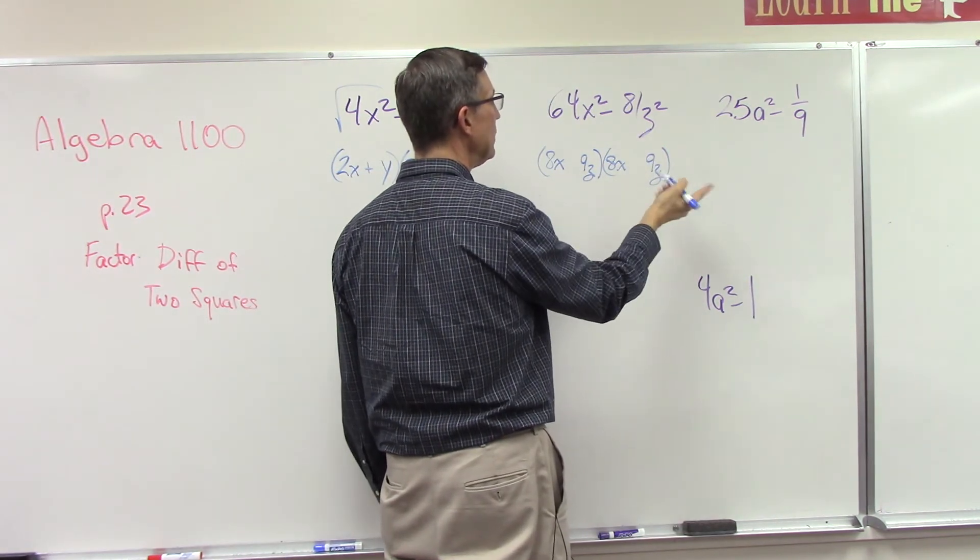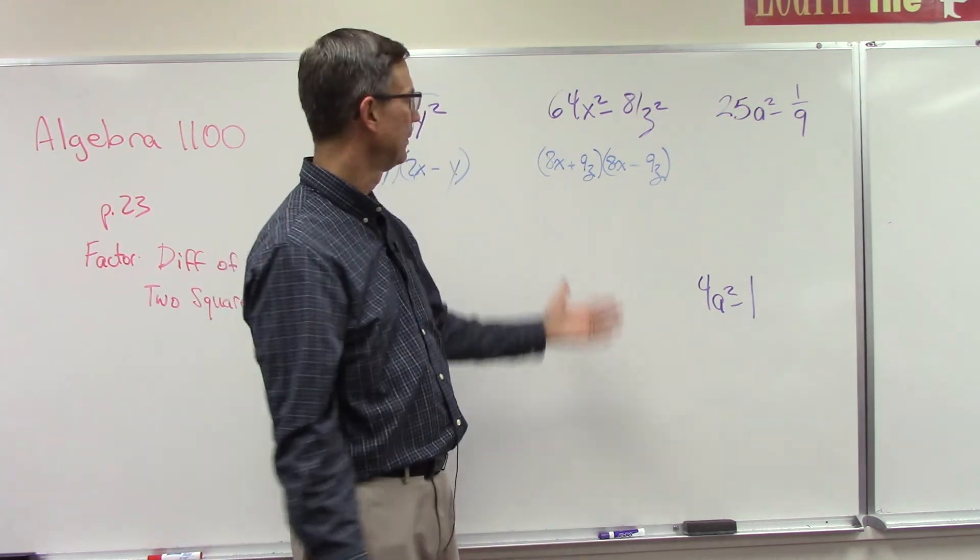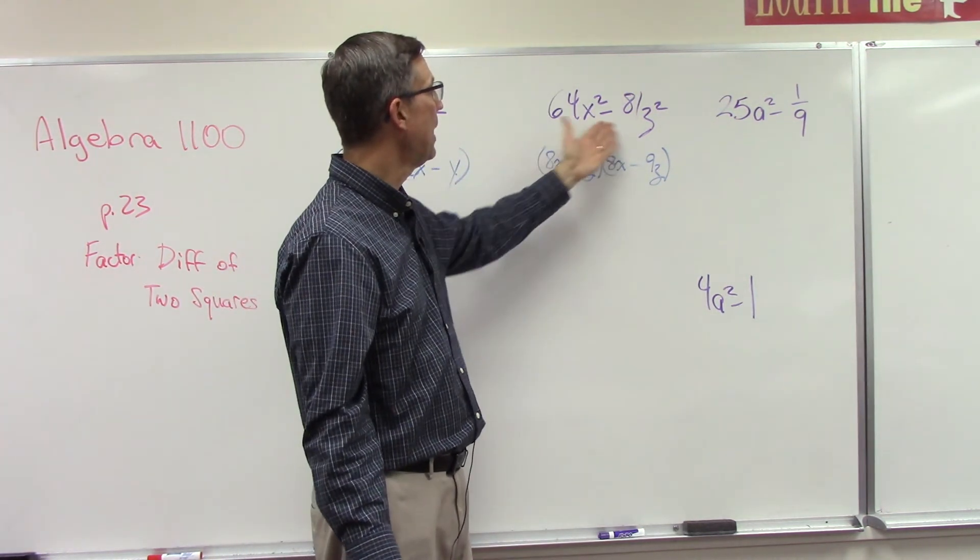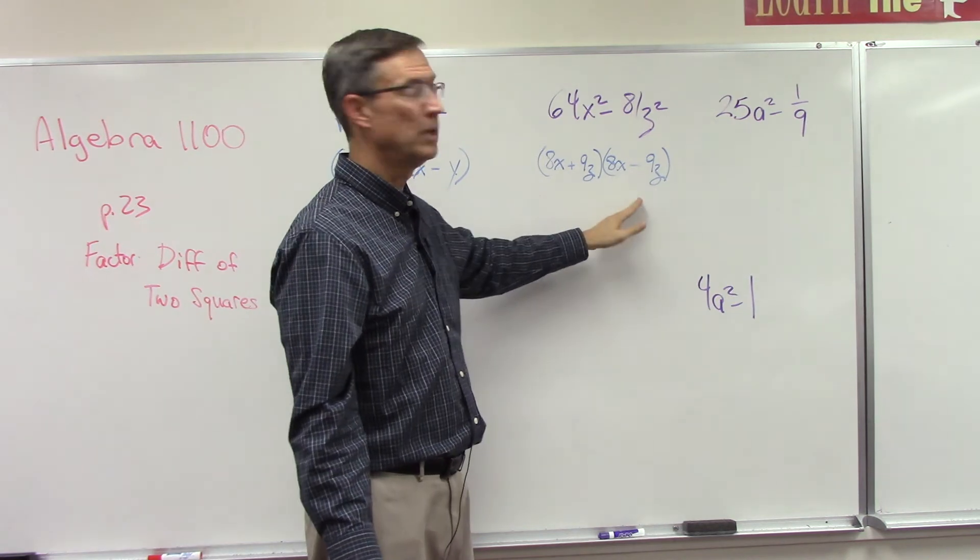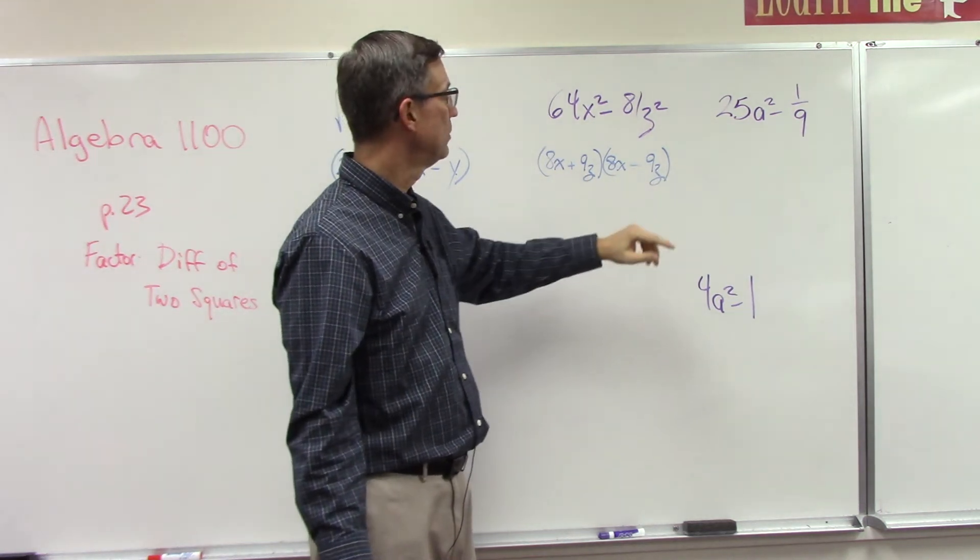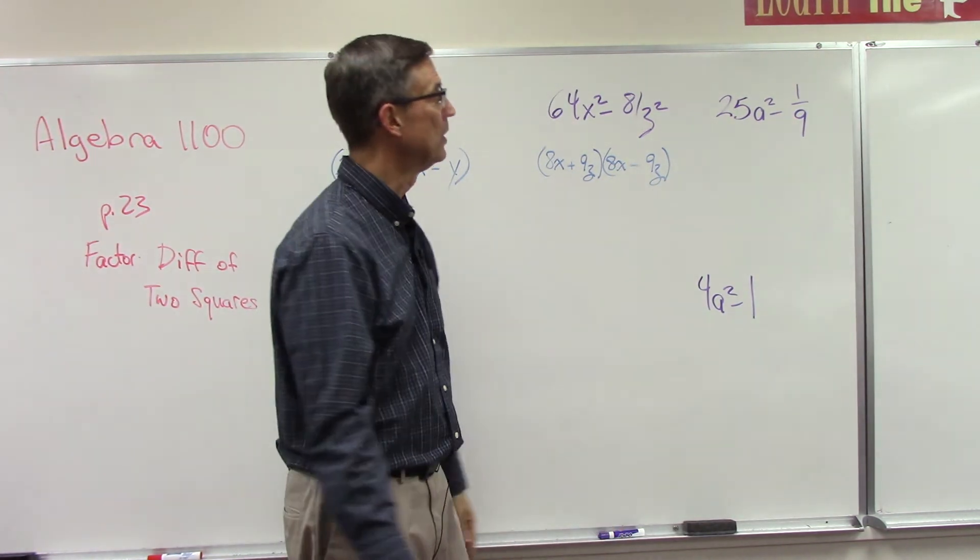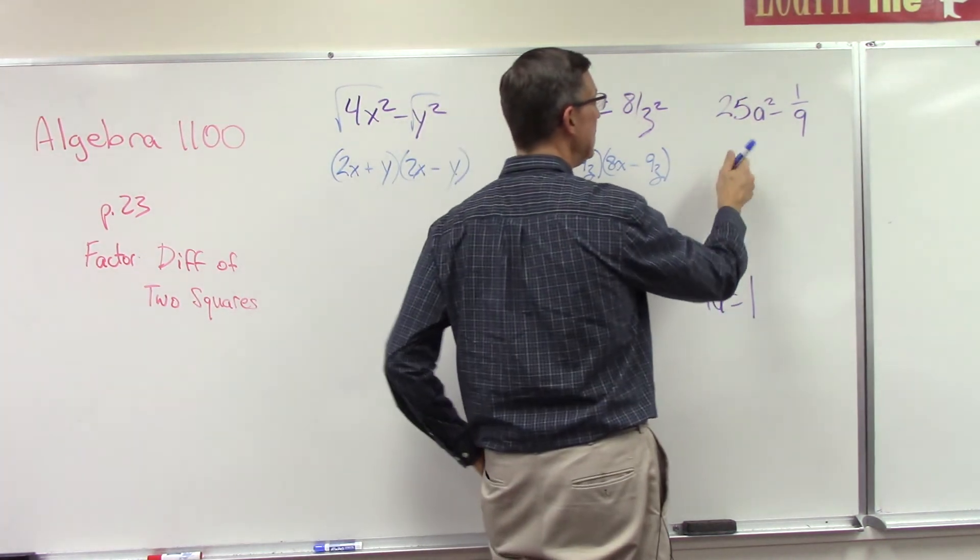And then real simple, we're done by just doing plus minus. So once you recognize the pattern, these become very easy to factor. The first two terms are the same, the last two terms are the same, and it's just a plus and a minus. You can check it by doing the foil method.